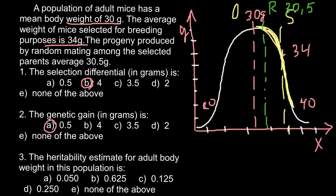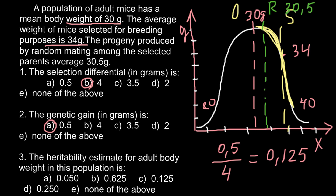The last question: the heritability estimate for adult body weight in this population is? In other words, how does the selection differential between 30 grams and 34 grams relate to the response to selection? We have a selection differential of 4 and a response of 0.5. To answer this, we divide the response to selection (0.5) by the selection differential (4), giving us 0.125. This is answer C.